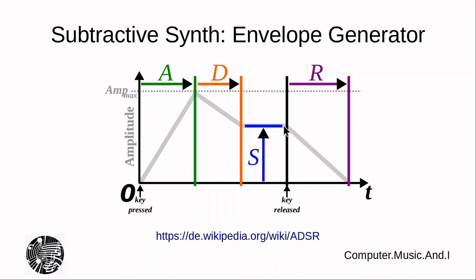Okay, that's the envelope generator. And so, it generates a signal, a function over time, defined by 1, 2, 3, 4 parameters.